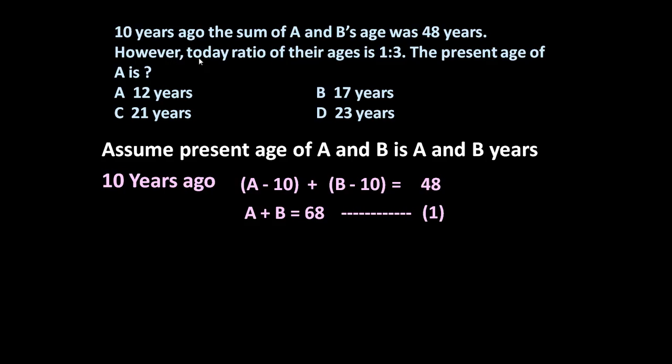Another statement is however, today ratio of their ages is 1 is to 3. It means today if we see ratio of A upon B, this is equal to 1 upon 3. It is given. So by cross multiplication, we determine B is equal to 3A. This is equation number 2.